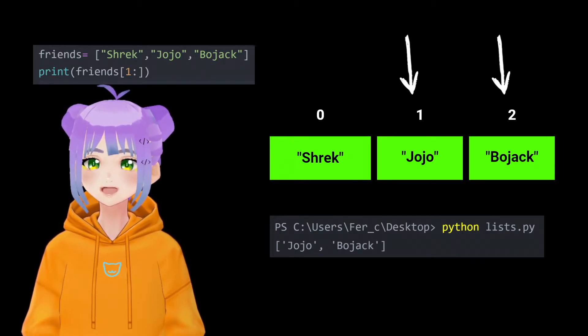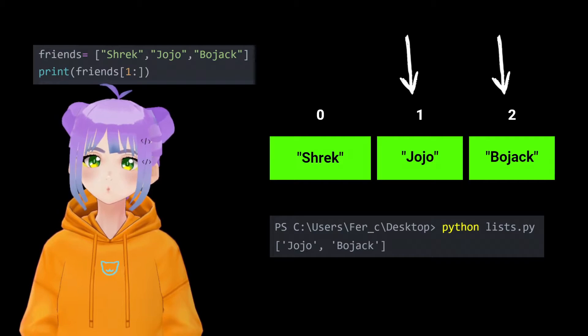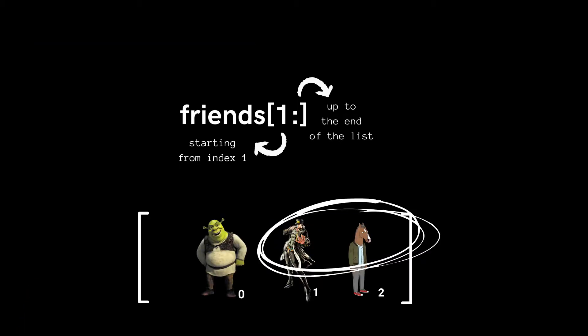Here I'm going to tell Python to look for all of the items — the names of all items that start from index number one up to the end of the list. When you leave the second argument empty, it means to the end of the list. So we are going to get back Jojo and Bojack.